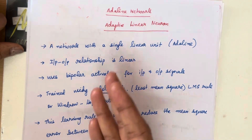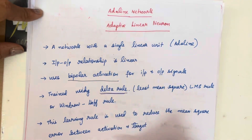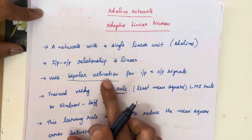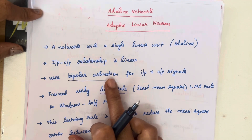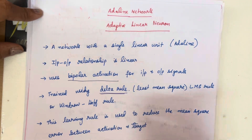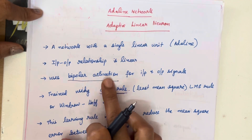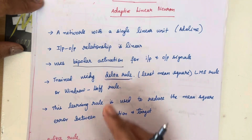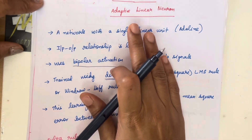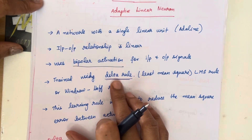The next important thing about the ADALINE network is that it uses a bipolar activation function. We know that activation functions are used to fire the neuron. We have several activation functions, such as the identity function, bipolar activation function, and binary step function. ADALINE uses the bipolar activation function, and one more important thing about this ADALINE neural network is that it is trained using the delta rule.